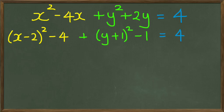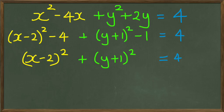Bringing all the constants together, we should end up with x minus 2 squared plus y plus 1 squared equals 4 plus 4 and plus 1. So our final equation is going to be x minus 2 squared plus y plus 1 squared equals 9.